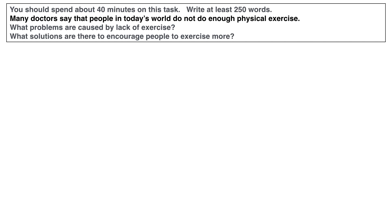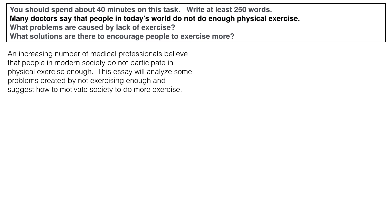So as we do with all essays, paragraph one, sentence one will be: paraphrase the topic. Not every word of the question, but what is the main topic? Say that in a different way. The second sentence of paragraph one: what are you going to write about? So are you going to write an opinion essay or a discussion, or are you going to describe problems and solutions? So we look at paragraph one — the paraphrase: 'An increasing number of medical professionals believe that people in modern society do not participate in physical exercise enough.' Notice how I've changed things around: doctors becomes medical professionals, today's world becomes modern society, and I was able to rearrange the phrase 'enough physical exercise' to 'physical exercise enough.' It's okay to use some of the words, but try to change some of the grammar as well, keeping the main idea and topic the same.